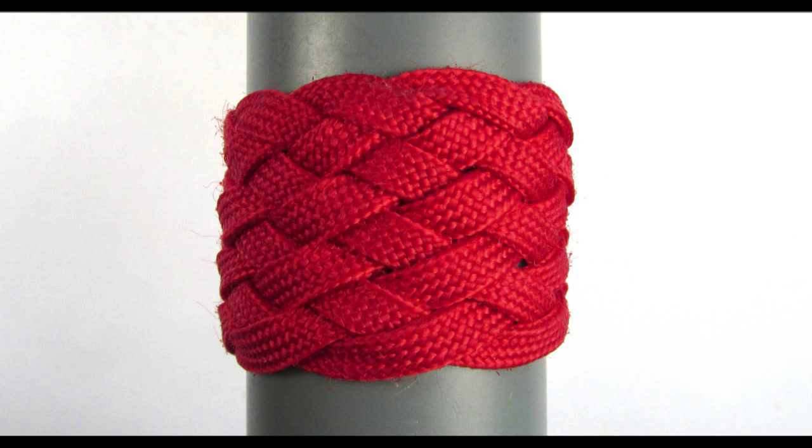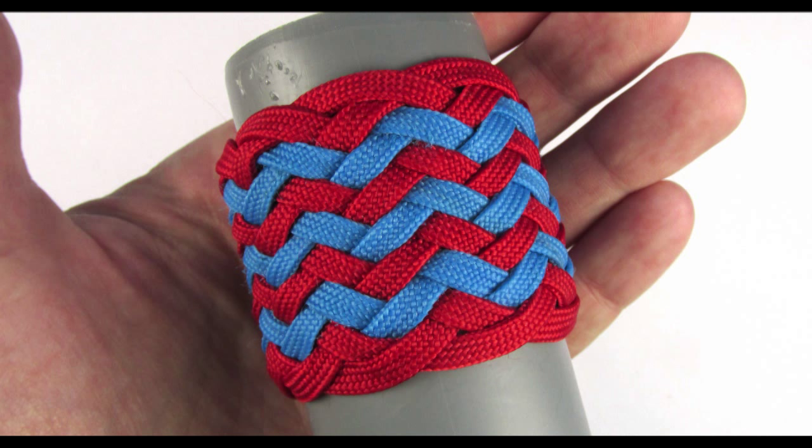It is on a 9-part 8-bight Turk's head, and in the next tutorial I'm going to show you also how to expand this with a pineapple interweave. The 9-part 8-bight Turk's head is a nice looking knot in itself. It can be tied in a variety of ways.